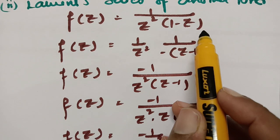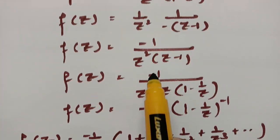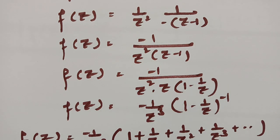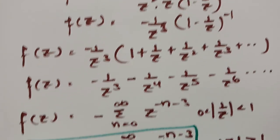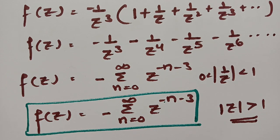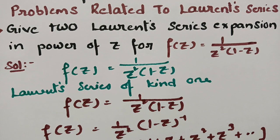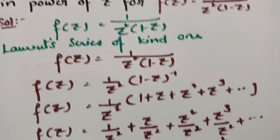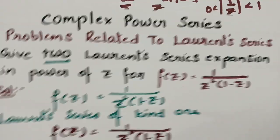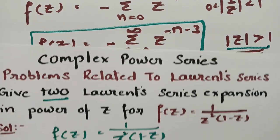So f(z) = 1 / (z² · (1 - z)). From this I took minus common to get (z − 1), then took z common to get −(1/z³) · (1 − 1/z)⁻¹, and after expanding this is the second Laurent series. These are the two Laurent series expansions — kind one valid for 0 < |z| < 1, and kind two valid for |z| > 1. Thank you so much for watching.